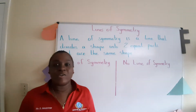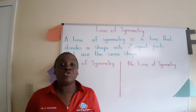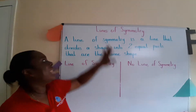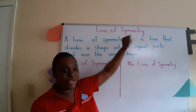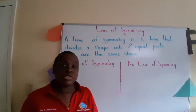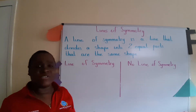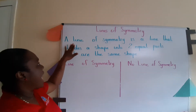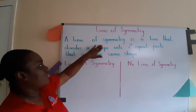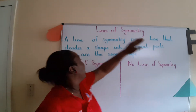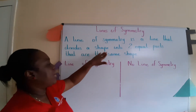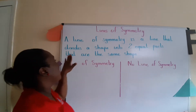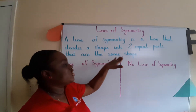Welcome boys and girls to mathematics class. Today we will look at lines of symmetry. So what is a line of symmetry? A line of symmetry is a line that divides a shape into two equal parts that are the same shape.